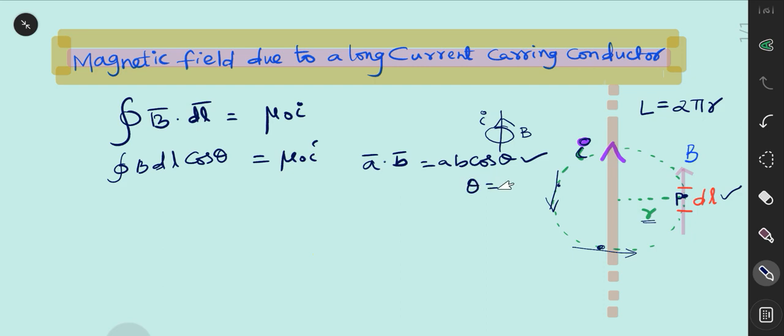Here, θ is the angle between B bar and DL bar. We know from this figure, we can clearly say that the angle between B bar and DL bar is equal to 0 degrees because DL bar and B bar are parallel to each other.